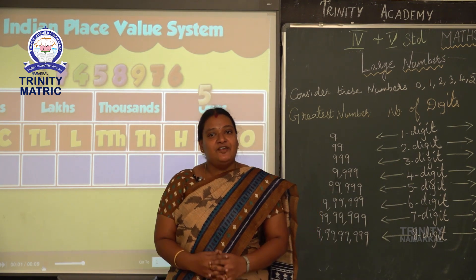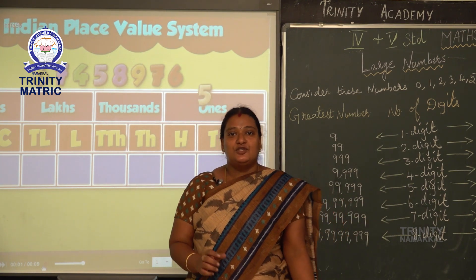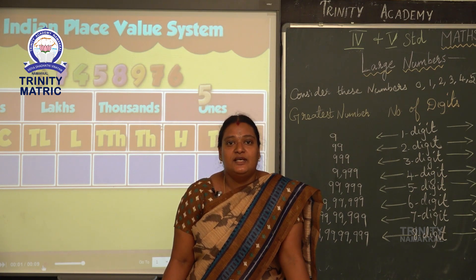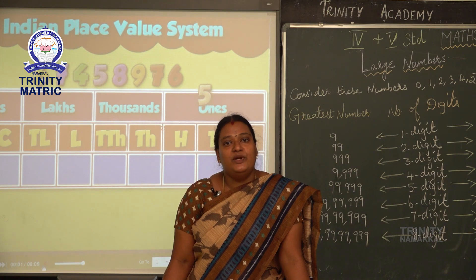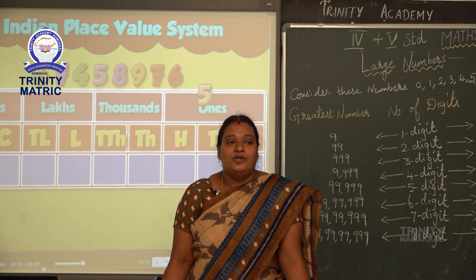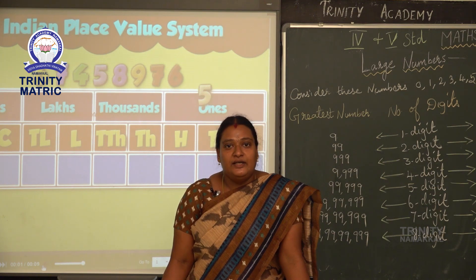Then, to find money and in measurement, we are using numbers. So children, where we are using small numbers and large numbers? For example, in our class, how many students are there? That is a 2-digit number — for example, 30 or 40. That is a 2-digit number and we can count that.